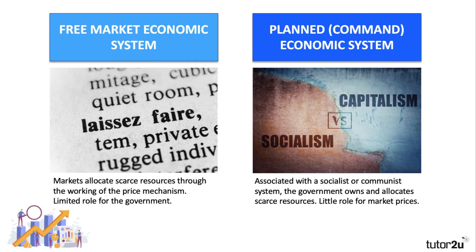The opposite would be a more rigid, planned, command economic system. Commonly associated with a socialist or communist system, the government or the state owns the scarce resources — the commanding heights of the economy, the leading means of production. The state allocates resources, sets production targets and growth rates according to their own subjective view of what people need. The market price mechanism plays little or no active role in informing resource allocation. Often in the planned or command system, the system does not meet people's needs and wants, and queuing and rationing are needed in a world of increasing scarcity.